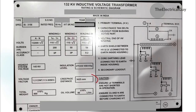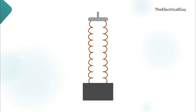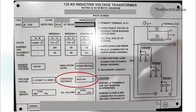Next is creepage distance, which is the shortest distance between two conducting parts along the surface of insulation. There are two types used: 25mm per kV and 31mm per kV. 25mm per kV is used majorly, while 31mm per kV is used where there is high pollution, like in cement industries. So if you multiply 145kV by 25, you get 3625mm, which is the value mentioned on our nameplate.